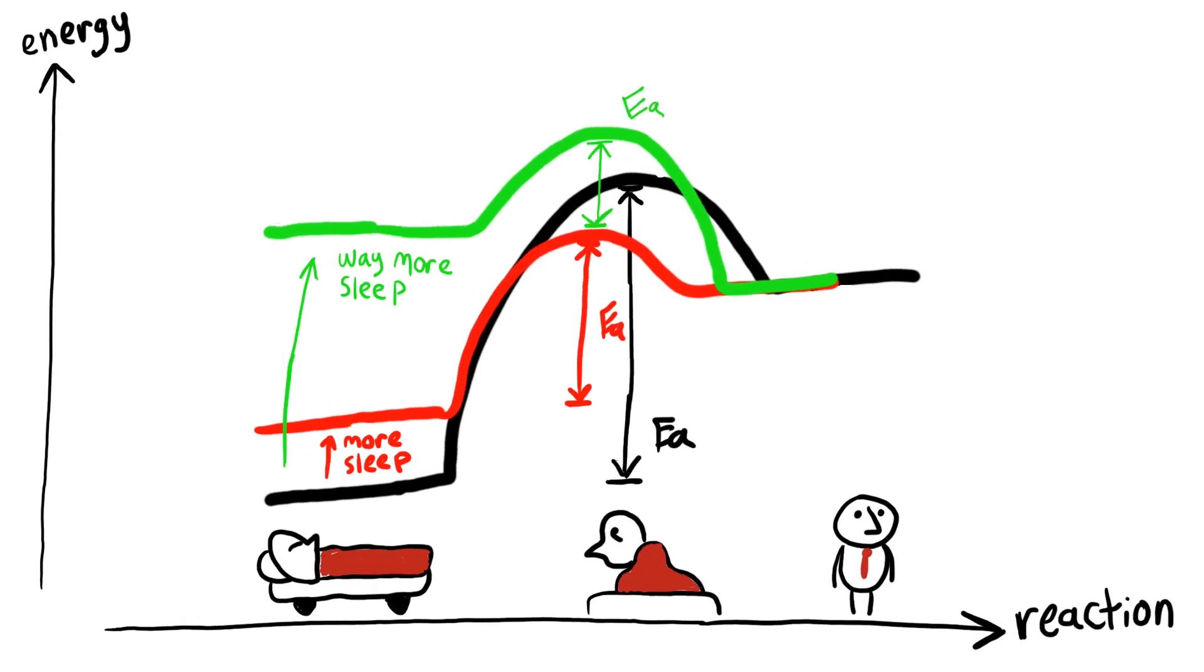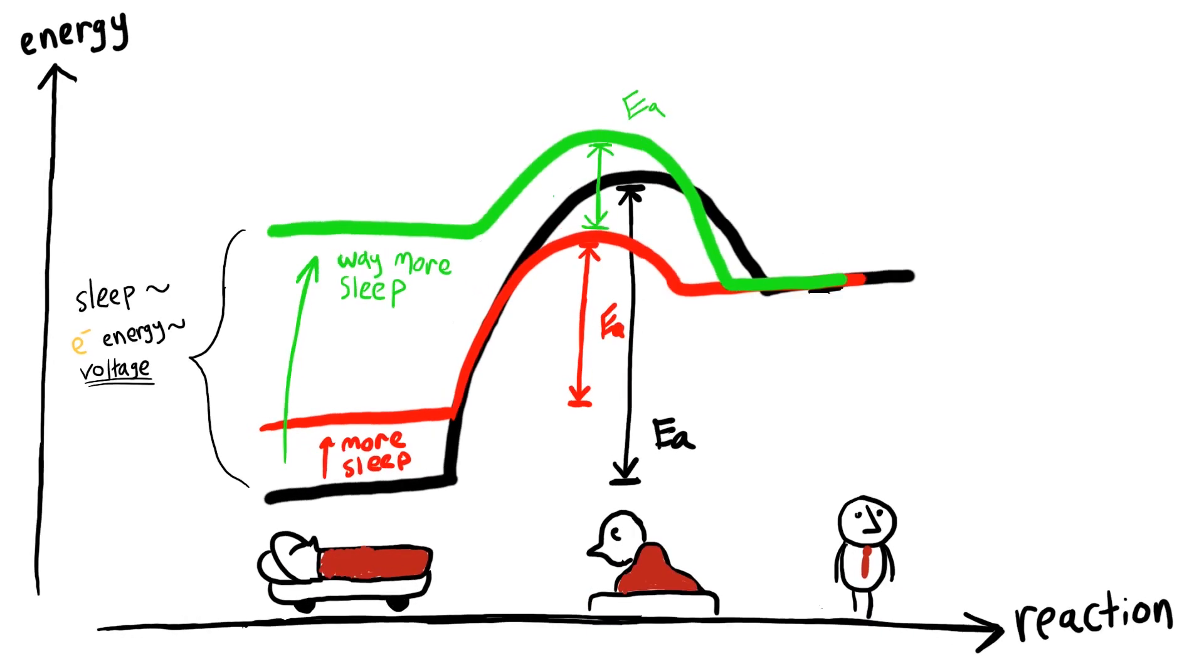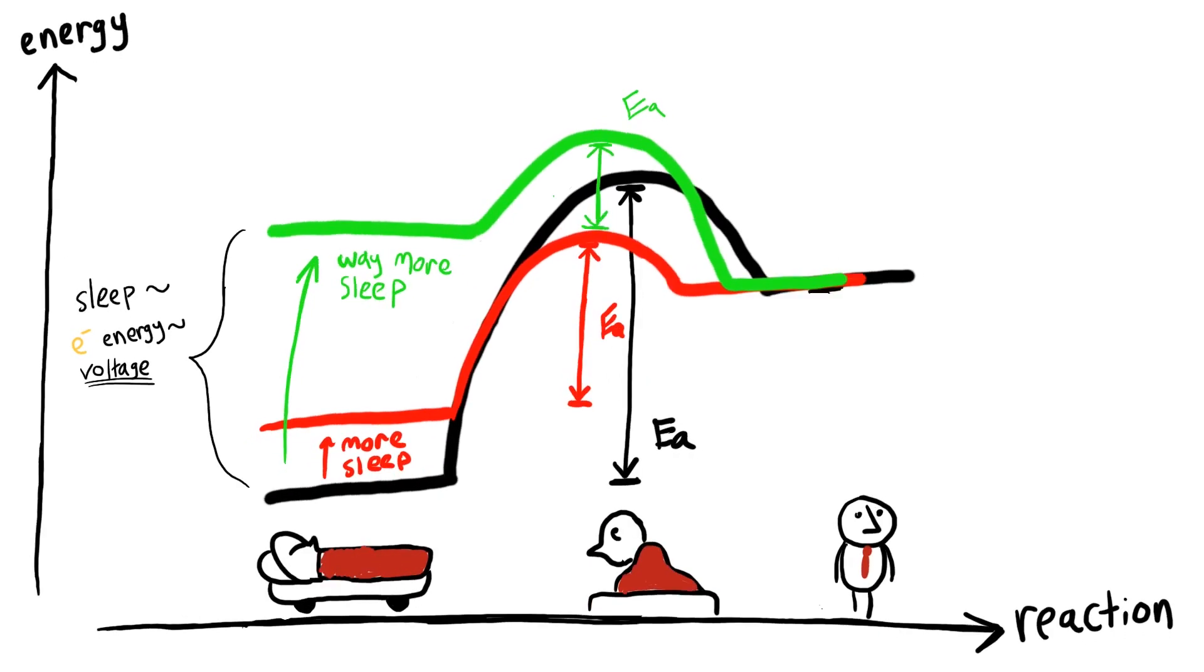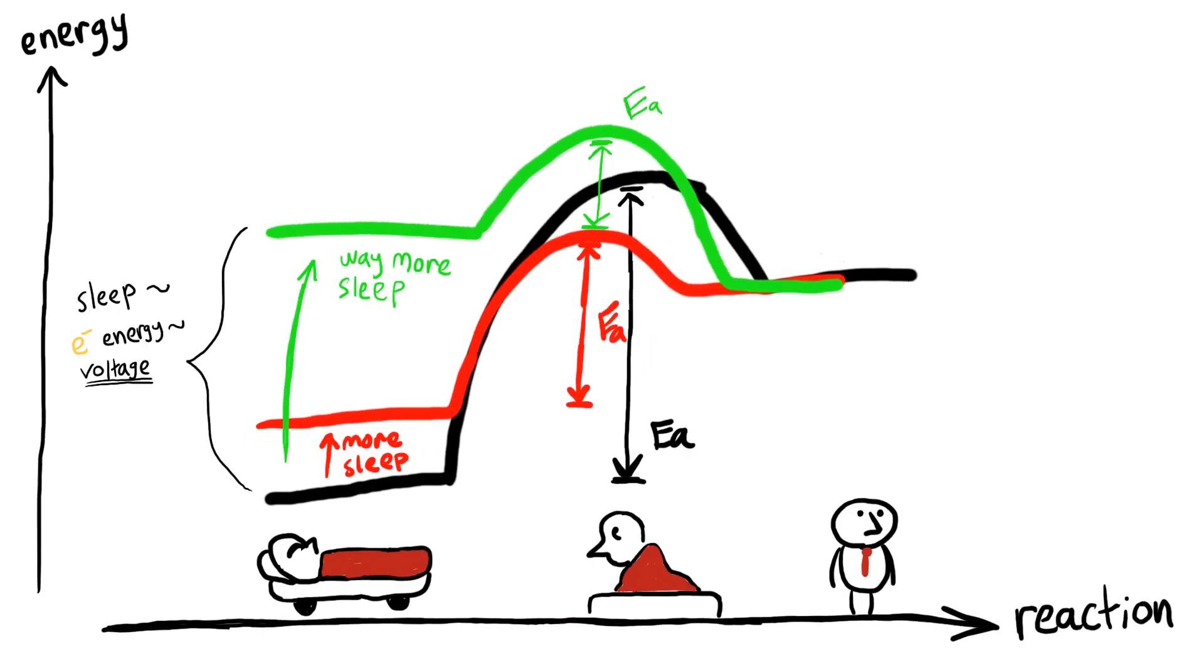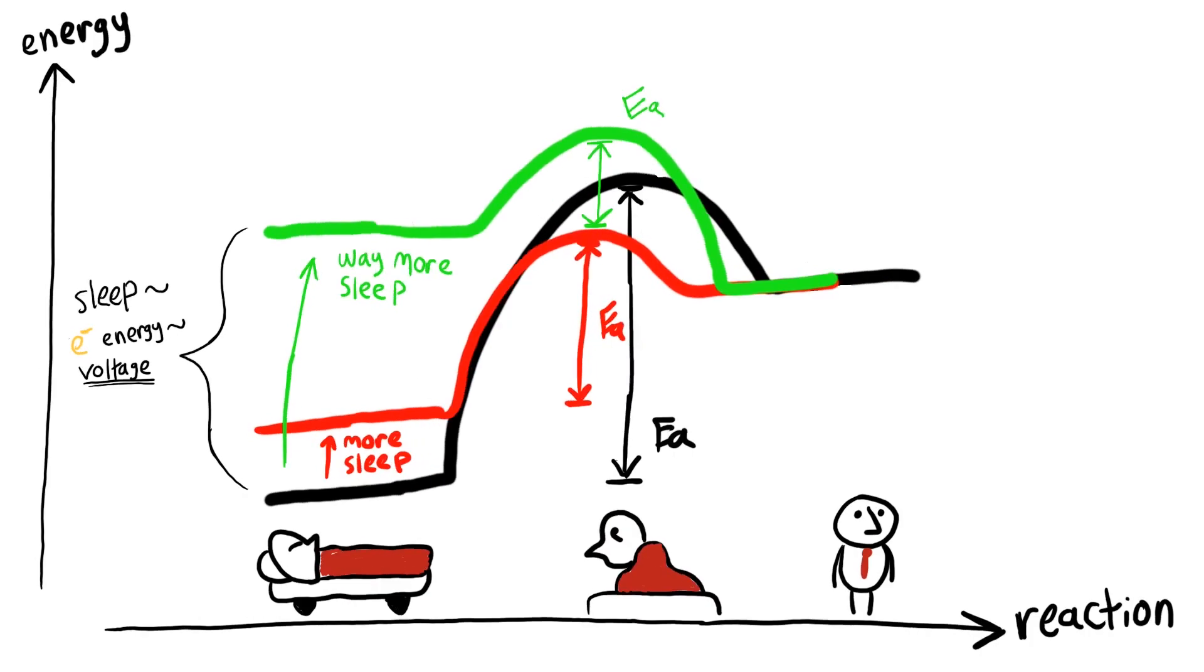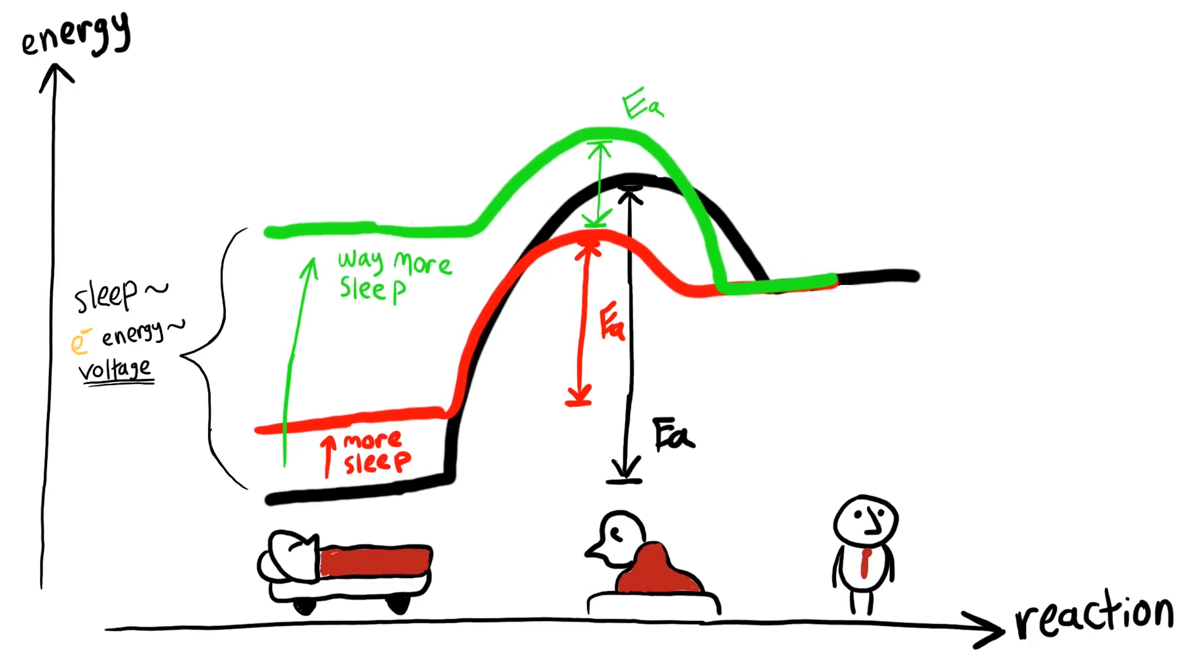In practice, changing the starting energy of the reaction is accomplished by changing the energy of the electron, which, as we said in the beginning, is directly related to changing the voltage of the cell. You might notice that the barrier increases a little bit as well. Naturally, when you're in bed for a long time, it gets harder to get out, so you can't get a perfect improvement from just sleeping longer.